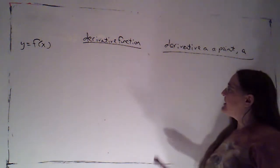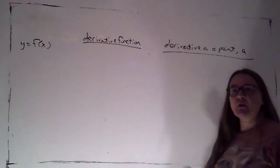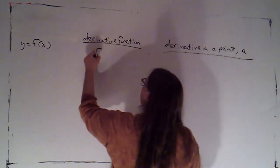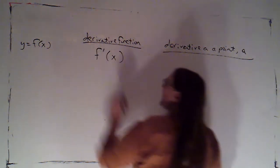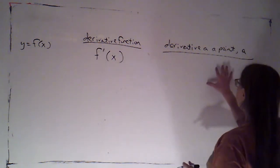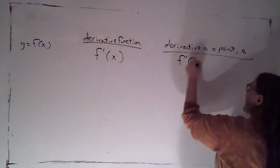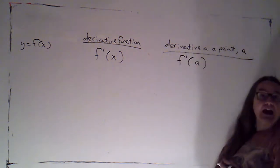we've already seen that we can use the prime notation. That's what Newton developed. So we've got f prime evaluated at x, and if I want to evaluate that at a point a, I just plug in a for x.